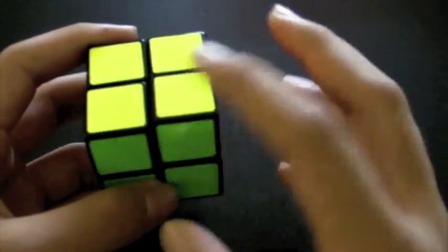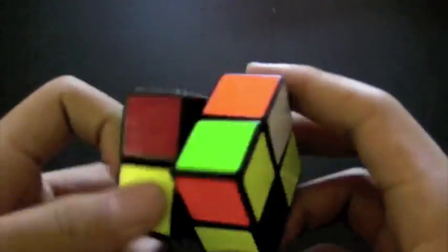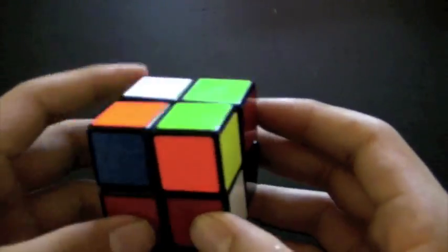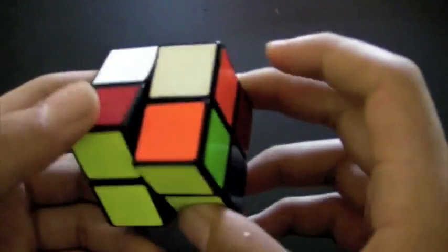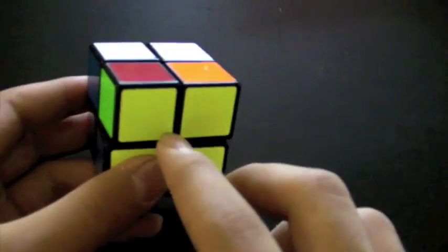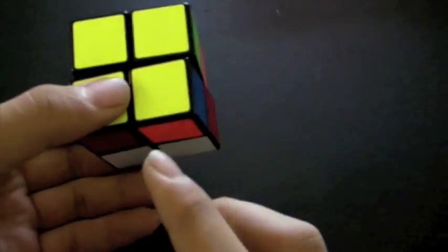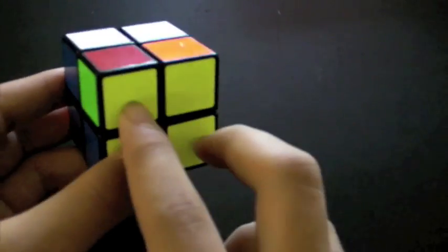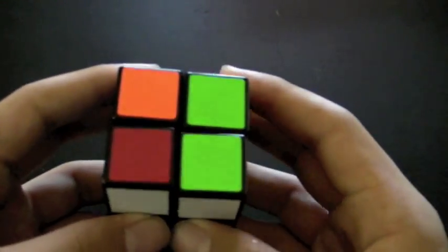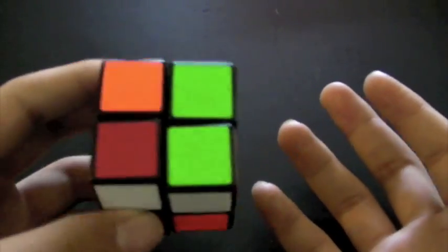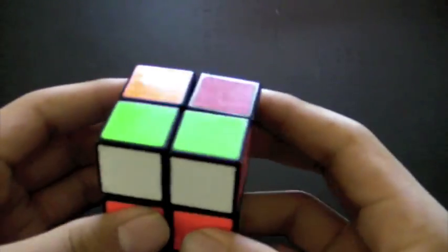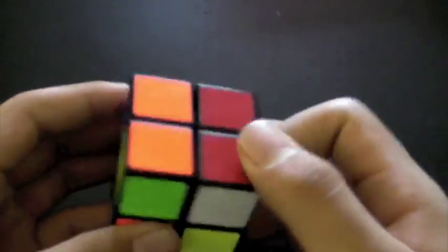A lot of people don't learn EG2 because, you might have noticed earlier in the video, if you get a case where on the bottom layer you have a diagonal swap, like these two need to be switched, instead of learning 40 new algorithms, you could always just do R2, F2, R2, and then you would get a CLL case.